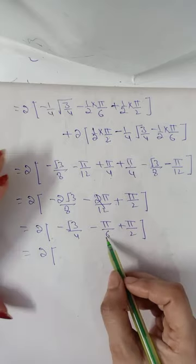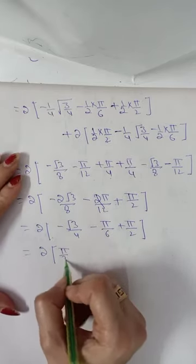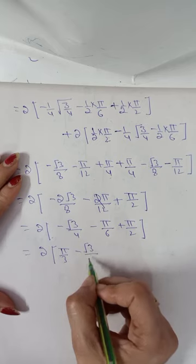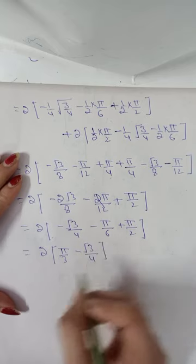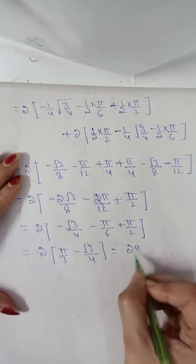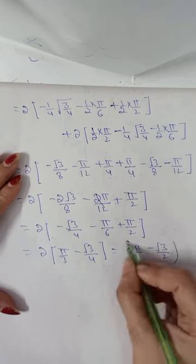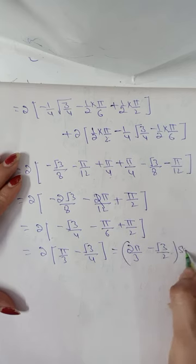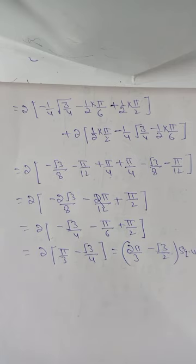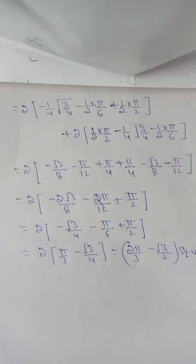The final answer is 2π/3 - √3/2 square units. In summary, a circle can appear along the x-axis or y-axis; whichever axis the curve lies along, we take limits along that axis and integrate in terms of that variable.